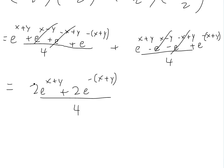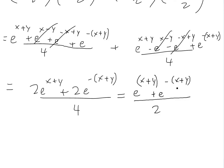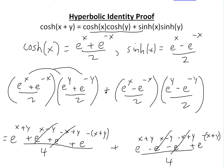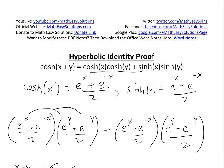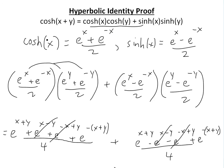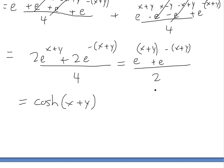We can divide the top and bottom by 2, canceling it out, and we're left with e to the x plus y plus e to the negative (x plus y), all divided by 2. This is exactly the definition of cosh of (x plus y), since cosh of x equals e to the x plus e to the negative x divided by 2, and we've simply replaced x with x plus y. So this completes our proof.